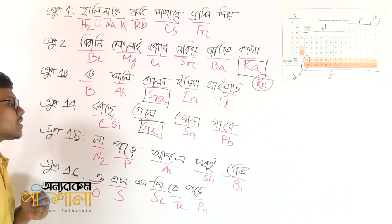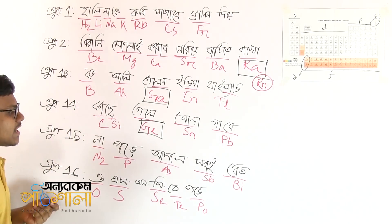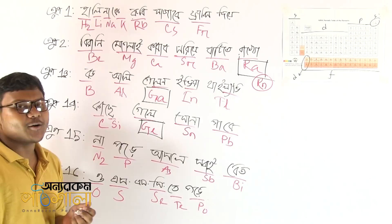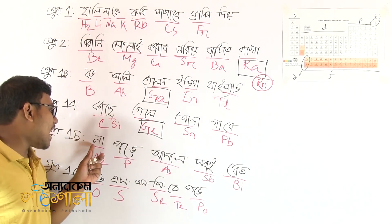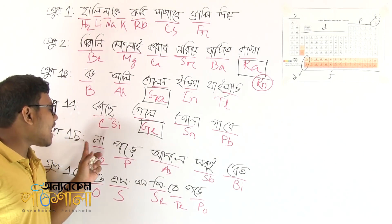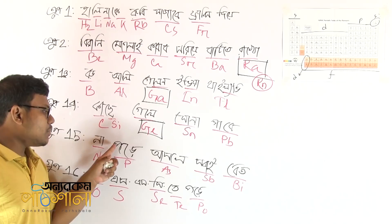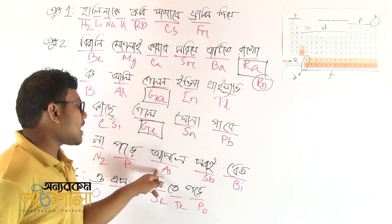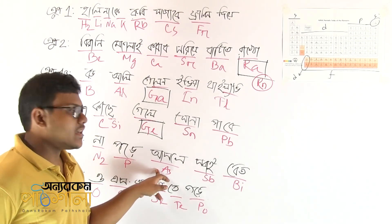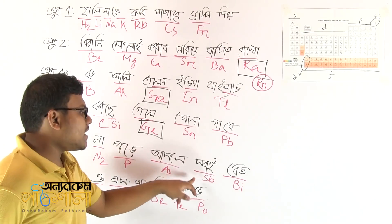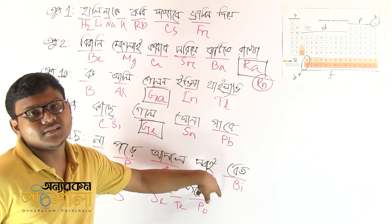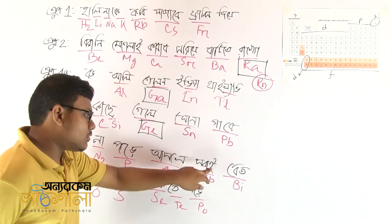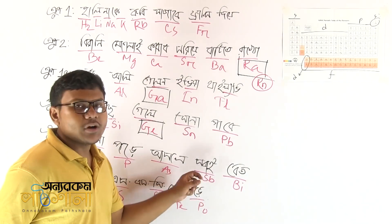Group 15 elements include nitrogen (N) and phosphorus (P). We also have antimony, sometimes called stibium, in this group.